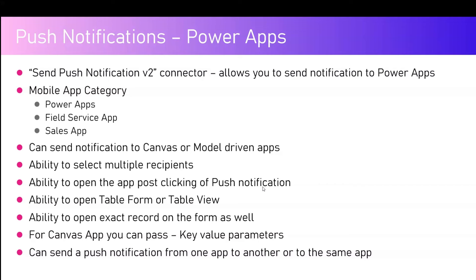There are two connectors — V1 and V2 — for push notification. In the context of Power Apps canvas app, if you select a data source you get two options: Power Apps Notification and Power Apps Notification V2. On the right-hand side, in Power Automate, you will see Send Push Notification V2 and Send Push Notification. Both do the same thing but with some differences in parameters.